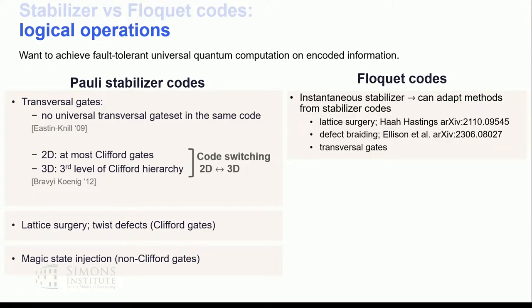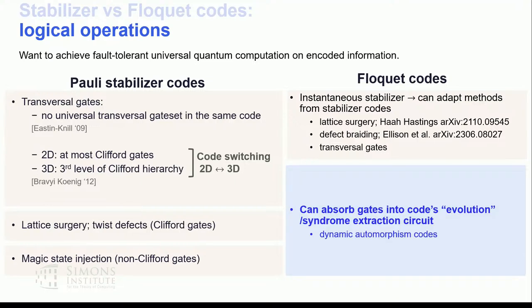For Floquet codes, since at each point in time we actually have a stabilizer group, we could in principle adopt any of the methods available for poly-stabilizer codes, and to a certain extent this has been done in the literature with lattice surgery and twist defects. However, in this talk I'm going to discuss a different way of doing quantum computation with Floquet codes — it turns out that we can absorb the logical gate we want to implement into the measurement sequence itself.